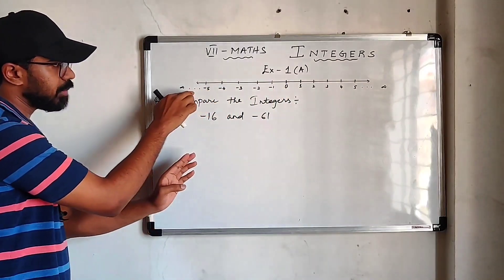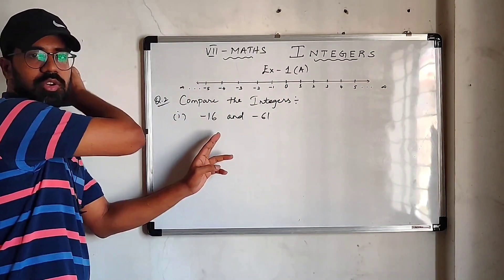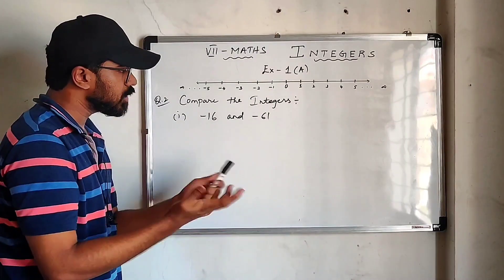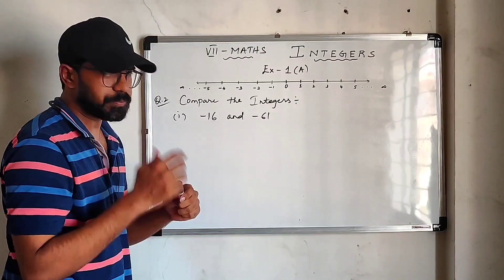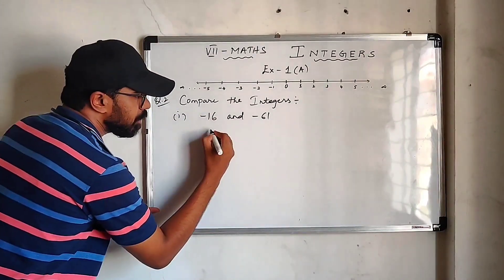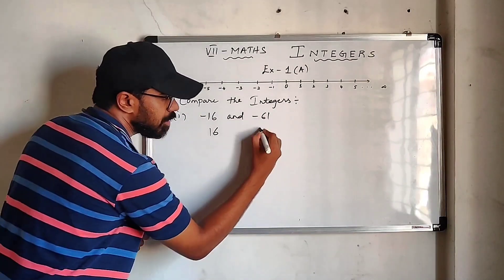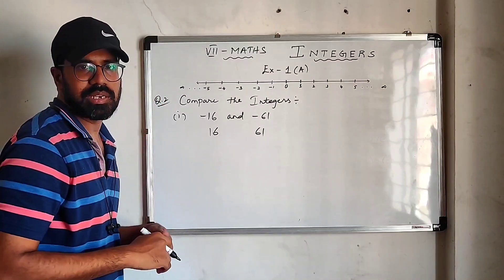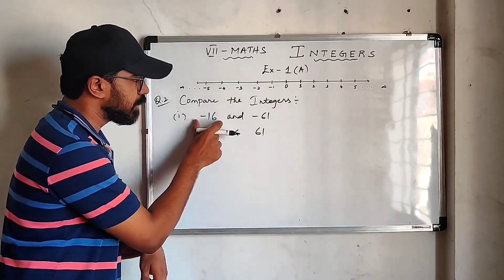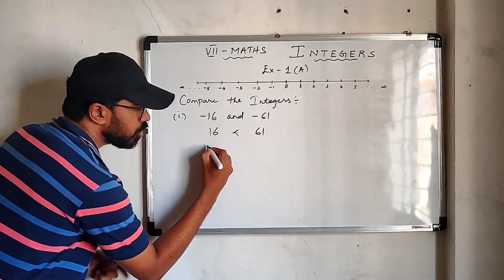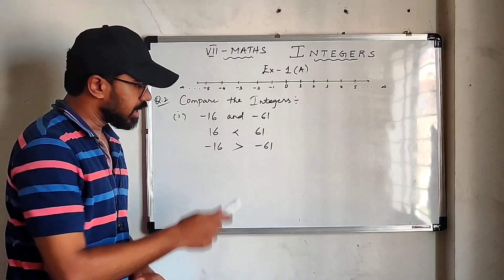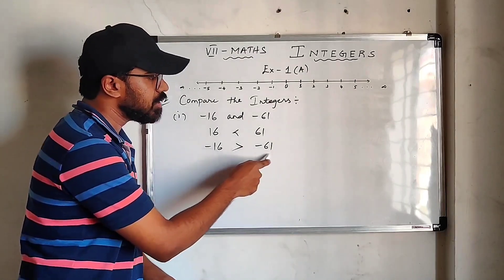We come to minus 5, minus 6, and so on — minus 16 comes first, then minus 61. So minus 16 comes closer to 0. Here is a quick method: imagine both numbers without their sign, so think of 16 and 61. You can easily tell 61 is the bigger number. But since our question involves negative integers, we reverse the direction — so minus 16 is greater than minus 61.